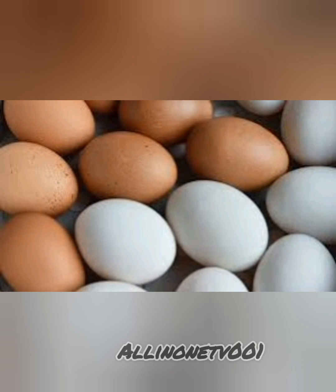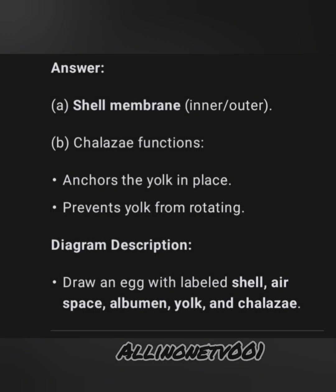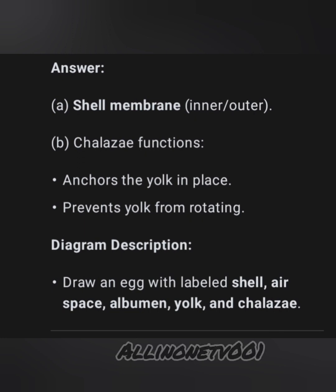Specimen G is a raw egg of a domestic fowl — a very popular specimen. Possible questions: A, name the membrane lining the air space in specimen G; B, state two functions of the chalaza in specimen G. Answer A: shell membrane. If you haven't noted this, go back to the video and take note — 80% of these things are sure to come out in biology practical.